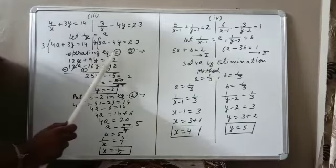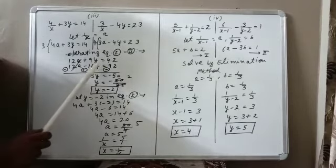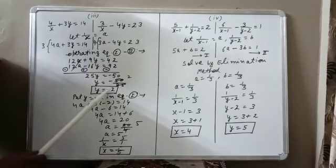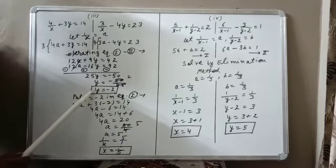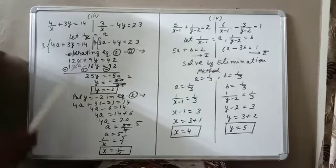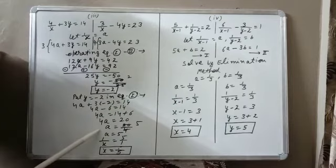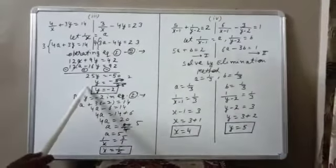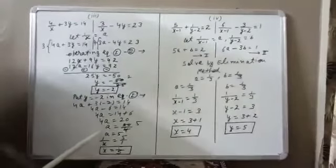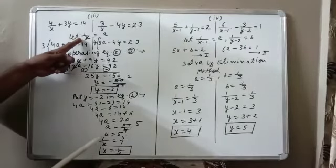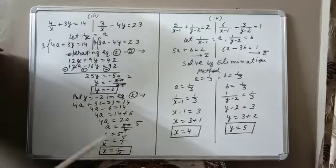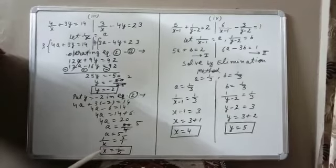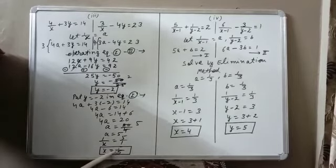Now we apply the elimination method. By applying the elimination method we get y equal to minus 2, which is our first answer. We put this value of y equal to minus 2 in the first equation and solve to get the value of a. Since we want the answer in x and y, and y we already have, we change a back into 1 upon x. Writing 5 upon 1 and cross multiplying, we get x equal to 1 upon 5.